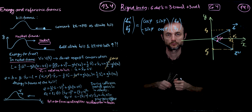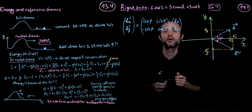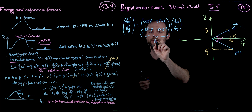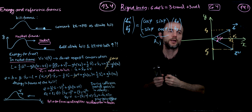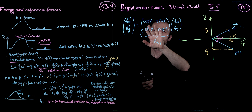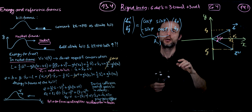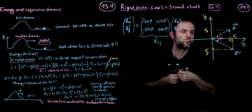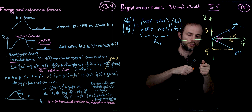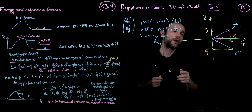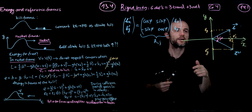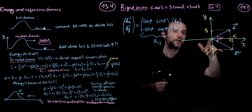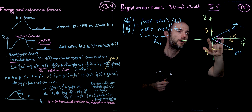Hello and welcome to lecture 14 part 1, where we are going to start a new topic of a rigid body. This corresponds to Goldstein chapter 4. A rigid body has 6 degrees of freedom, which come about from 3 translational degrees of freedom and 3 rotational degrees of freedom. So that's where 6 come from.